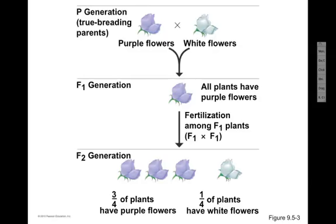The purple and the white produced all purple offspring — the white was gone. Mendel saw that and wondered where it went. He felt that there were units of information being passed down; he didn't know what they were, but obviously something came from the purple plant and not from the white. So what he did then is he let these F1 plants self-fertilize — the F1 mated with F1.